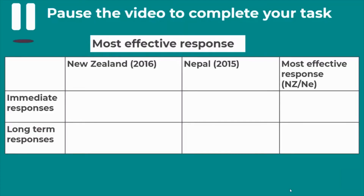Based on the evidence you have, decide which of those countries had the most effective response. In the third column of your table, write the name of the country you think had the best immediate responses, and the country you think had the most effective long-term responses. Pause the video, read it through, think about it, and then we're going to apply what we've learned.